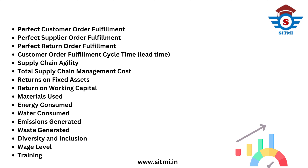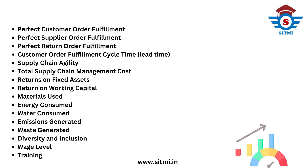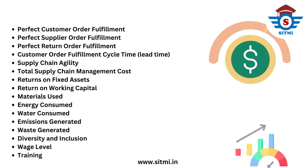It also talks about order fulfillment cycle time, which one can also refer to as lead time to close or fulfill the order. Very importantly, it also measures supply chain agility — how agile or flexible our supply chain is to manage unplanned scenarios like spike orders or situations not in control, like strikes, floods, and other disruptions.